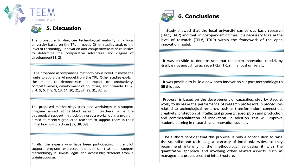Conclusions. The study showed that the local university carries out basic research, TRL-1 and TRL-2. The open innovation model by itself is not enough to achieve TRL-8 and TRL-9 in a local university. It was possible to build a new open innovation support methodology to fill this gap. The authors consider that this proposal is only a contribution to increase the scientific and technological capacity of local universities, and they recommend intensifying the methodology, validating it with a quantitative approach, and involving other related aspects such as procedures and infrastructure.